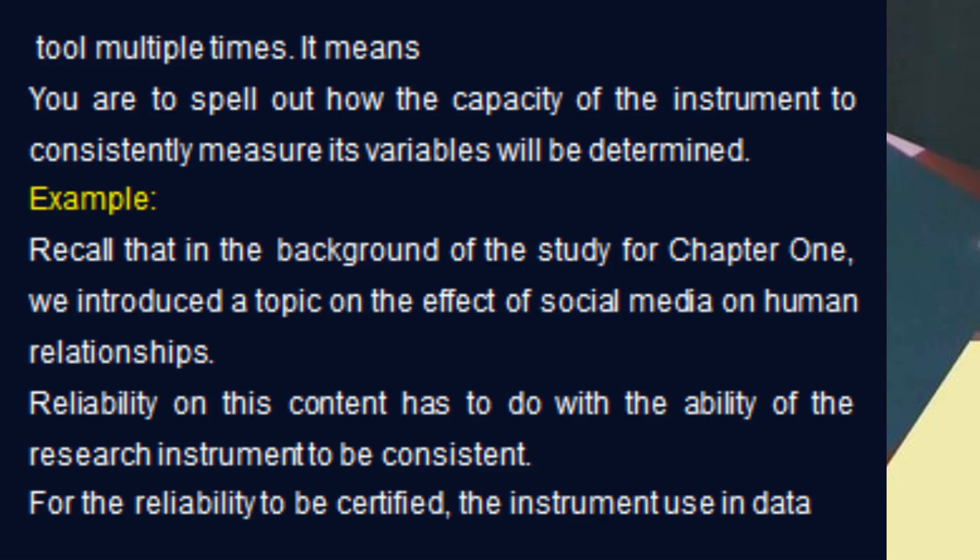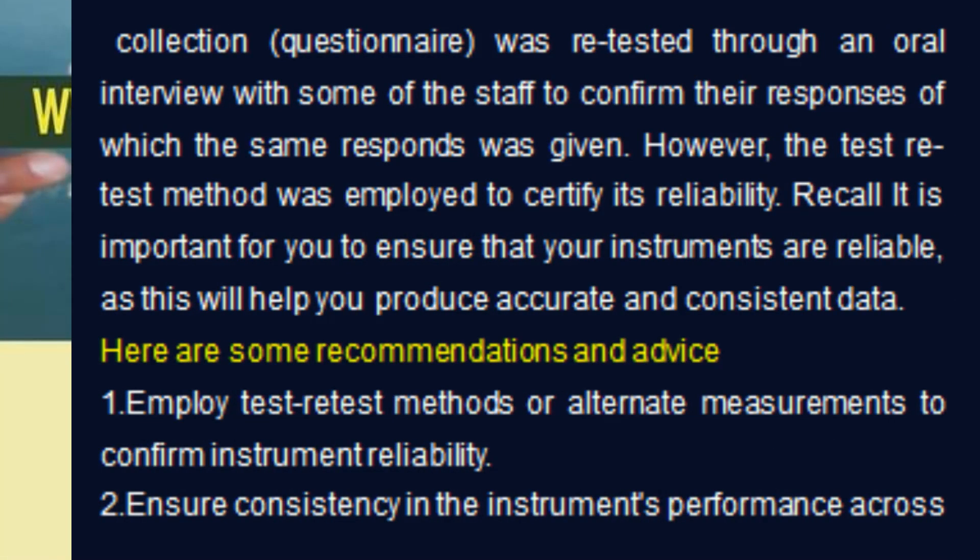For example, recall that in the background of the study for Chapter 1, we introduced a topic on the effect of social media on human relationships. Reliability on this content has to do with the ability of the research instrument to be consistent. For the reliability to be certified, the instrument used in data collection — a questionnaire — was retested through an oral interview with some of the staff to confirm their responses, and the same response was given. The test-retest method was employed to certify its reliability. It is important to ensure that your instruments are reliable, as this will help you produce accurate and consistent data.